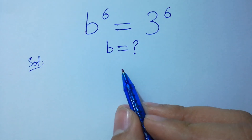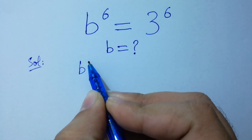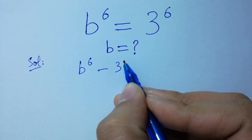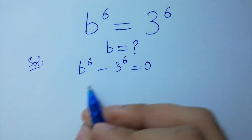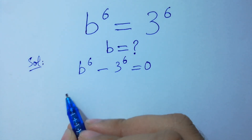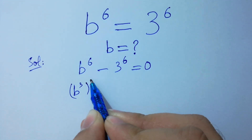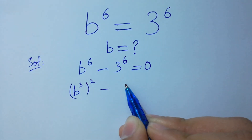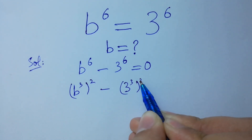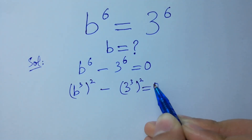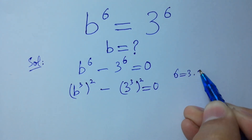This problem can be written as B to the power 6 minus 3 to the power 6 equals 0, which is the same as (B³)² minus (3³)² equals 0, since 6 equals 3 times 2.